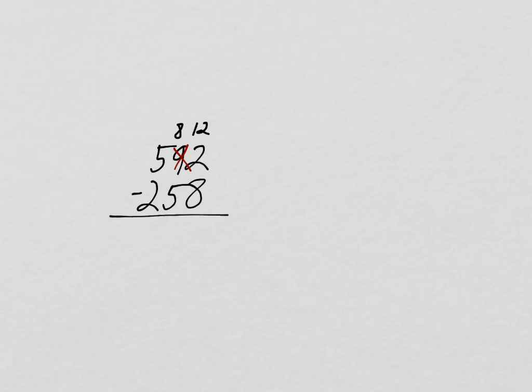So, now let's subtract. Oh, I realized I did one thing wrong. I should have crossed out that 2 as well, because that's not there anymore. That's going to confuse me. I'm going to take 8 ones from 12 ones. 5 tens from 8 tens leaves me with 3 tens. 2 hundreds from 5 hundreds equals 3 hundreds. So, that shows me that that's 334.